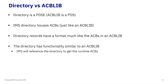Let's talk about directories versus ACB libraries and see what the difference is. The directory is a PDSE; the ACB library is a PDS. Frankly, when you're talking about directories, think ACB libraries — because directories house ACBs just like an ACB library houses ACBs. The directory records have a format much like the ACBs in an ACB library. So the ACB blocks themselves didn't change even though we're calling it the directory dataset. The directory has functionality similar to an ACB library — when you start up an IMS control region or online region, it'll reference the directory to get the runtime ACB blocks.